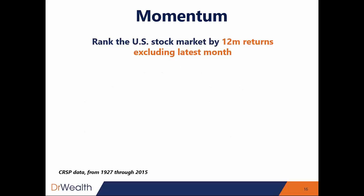Next we talk about momentum. The authors define momentum by the 12-month returns, excluding the latest month. The reason for excluding the latest month is that researchers found there tend to be some reversal on a month-by-month basis, so you don't want the momentum to be affected by any correction in the latest month. They only measure the last 12 months excluding the latest month — that's how they define stock momentum.